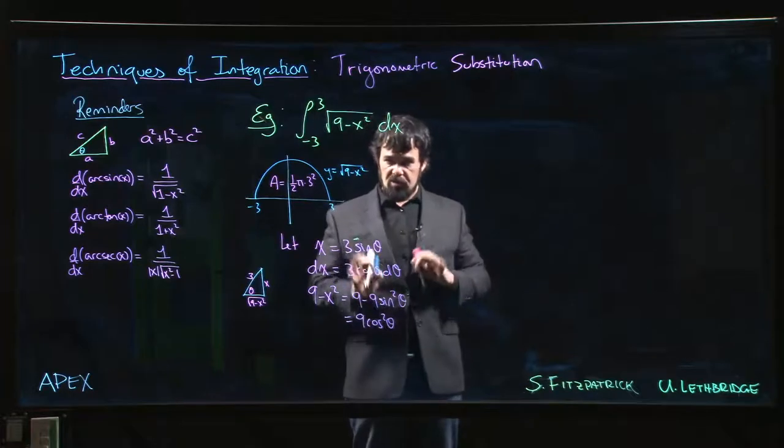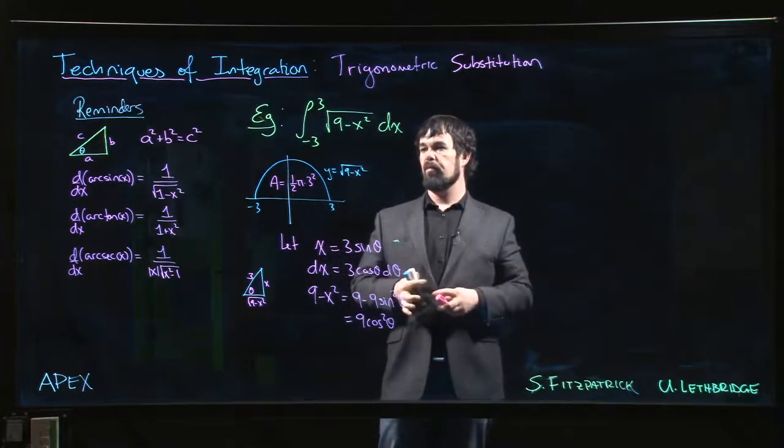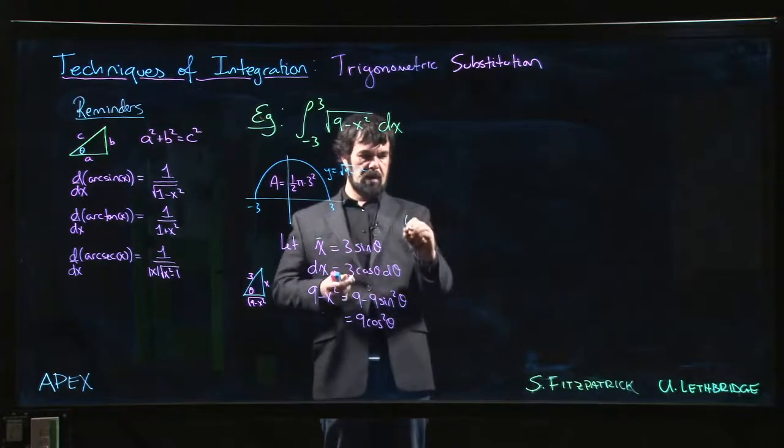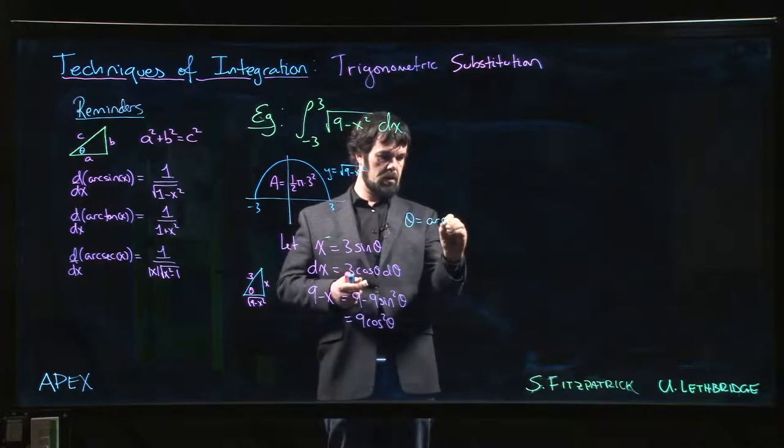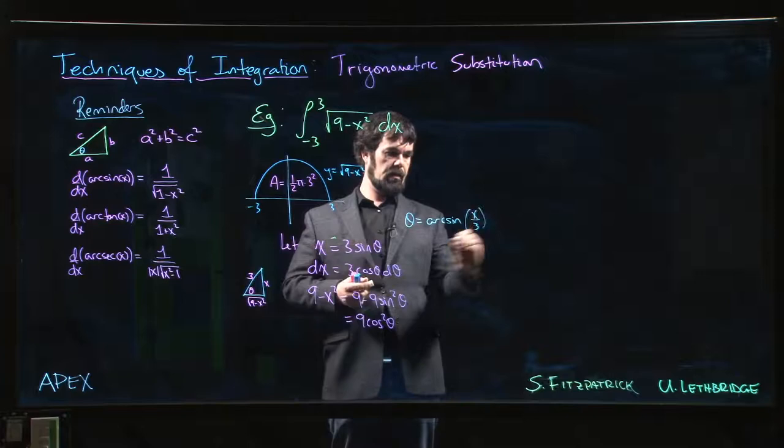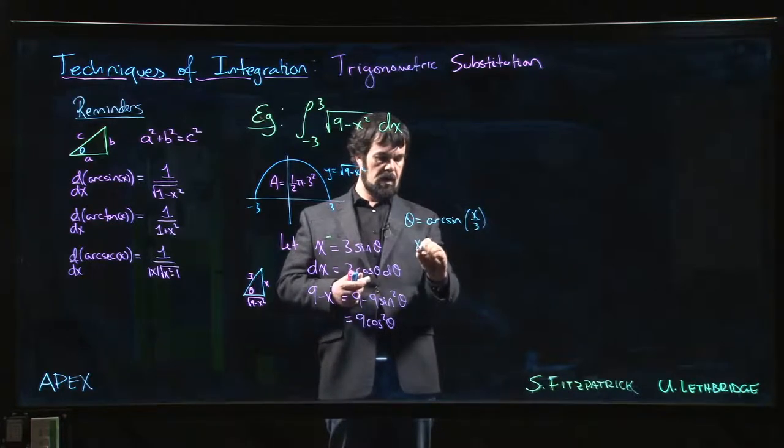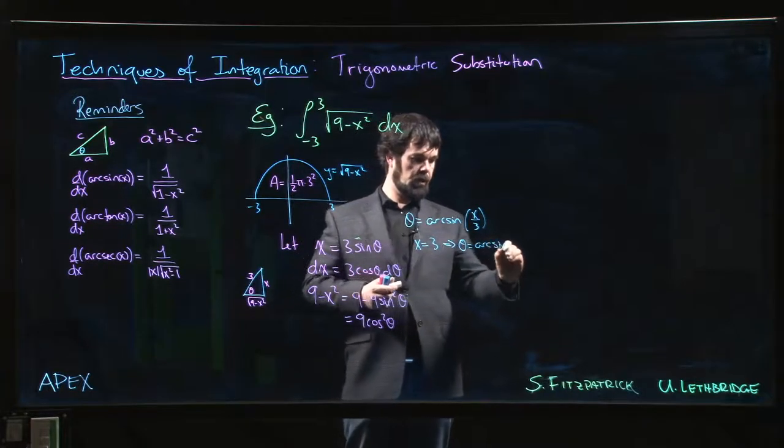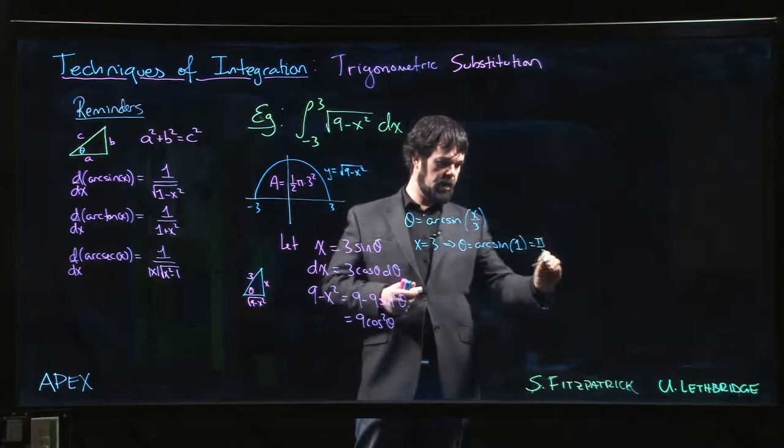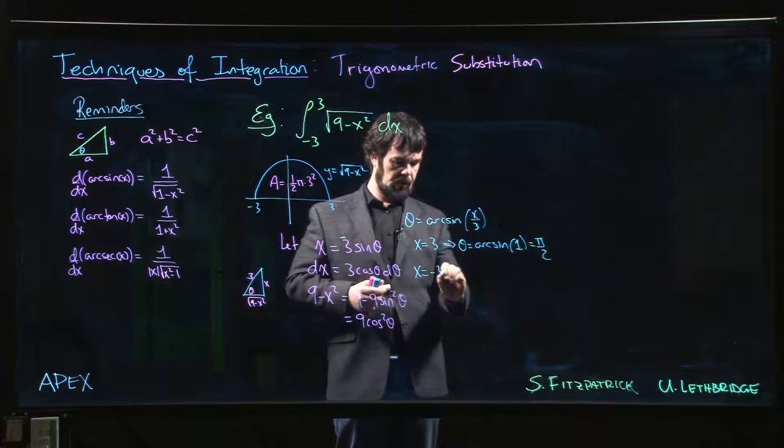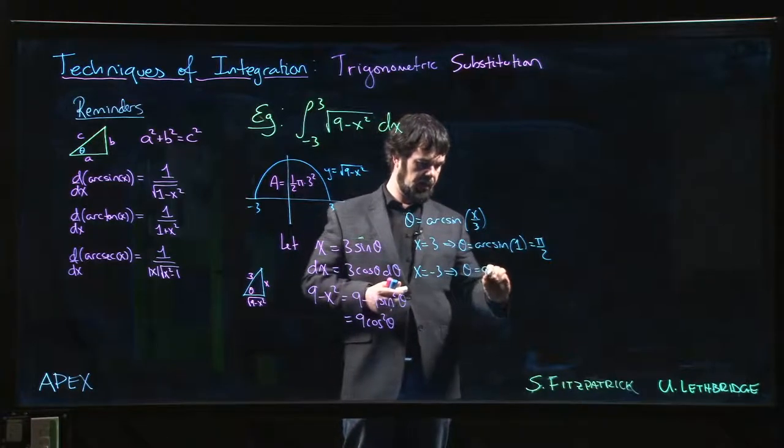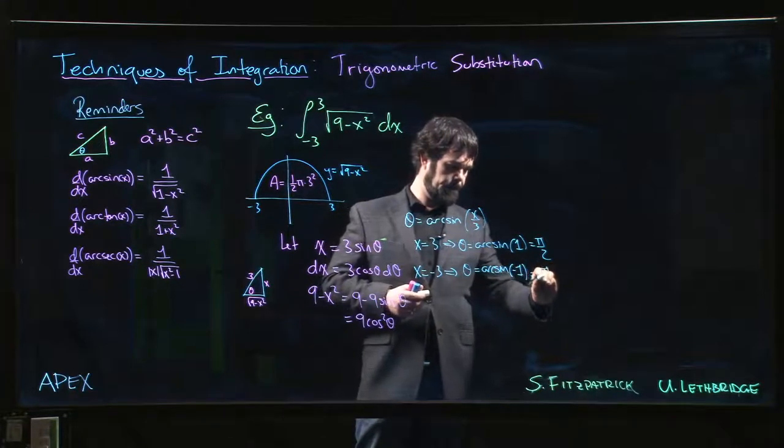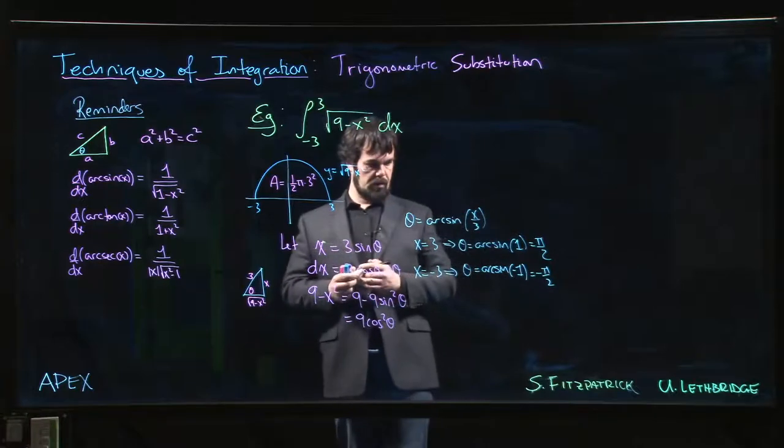But we can just go through the machinery and we'll get to the answer in the end. The only other thing to keep in mind is that theta, so theta is arc sine of x over 3. So if x is equal to 3, that means theta is arc sine of 1, which is pi over 2. And if x is equal to minus 3, that means that theta is arc sine of minus 1, which is minus pi over 2.